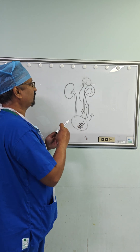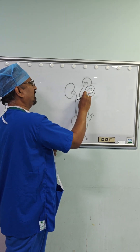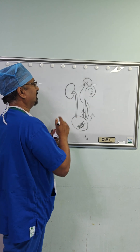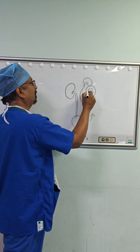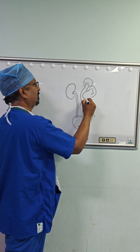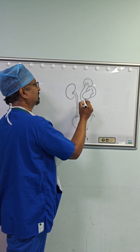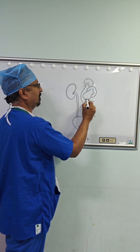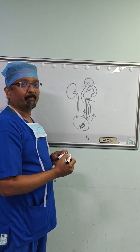Sometimes, this bottom portion of the kidney also causes bulging due to a blockage. This area gets blocked, so sometimes we have to do a surgery called pyeloplasty.